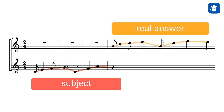However, usually the subject will get slightly modified. This allows the melody to fit better into the key and makes the music flow more smoothly. In our example, the melody ends on the root note C in order to allow for a chord in the tonic C major at this position. This kind of modified subject is called a tonal answer.